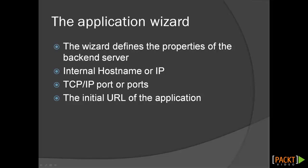When configuring an application on UEG, the administrator uses the application wizard to define the properties of the backend server that hosts the application. This could be, for example, the hostname and TCP/IP port of a SharePoint server. An application also contains several other options, such as the initial URL that is launched when the application is clicked on by the user.